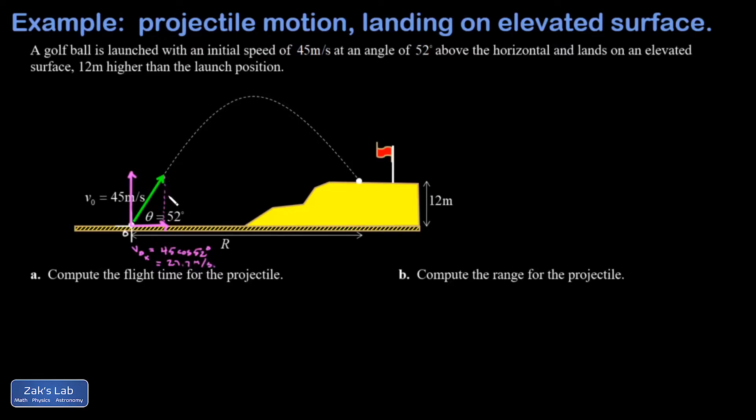The y component corresponds to the vertical leg of that right triangle, and so I get v naught y is equal to 45 sine of 52 degrees, using the sine function because I'm trying to grab the opposite side of the right triangle to the angle that was labeled. And I get 35.5 meters per second for the y component of the velocity.